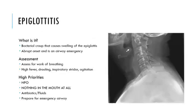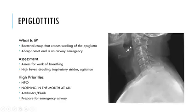Epiglottitis is an airway emergency. It is considered bacterial croup and causes swelling of the epiglottis. Looking at the x-ray, you can see how massive the epiglottis is — a normal epiglottis should sit like a small bubble, but here it's nearly obstructing the airway. It can have a very abrupt onset and is an absolute airway emergency requiring airway management and antibiotics immediately.